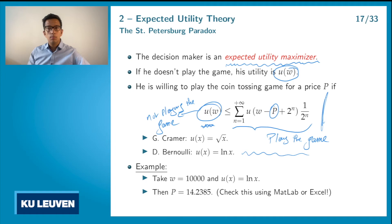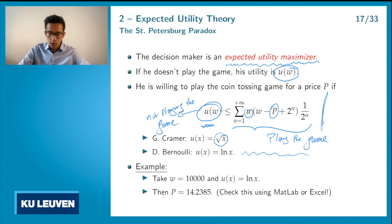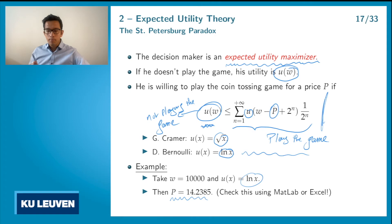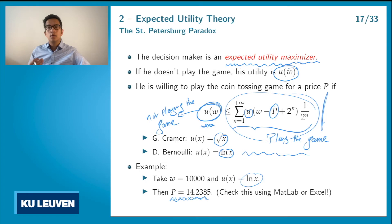You can check different utility functions; common ones are the square root function and the logarithmic function. If you use the log function, you will find that for a premium equal to approximately $14, the decision maker is willing to play the game, meaning the utility when playing exceeds the utility when not playing. Moreover, if the premium is below this amount — say $10 or $5 — the decision maker will also play the game, because you always prefer paying a lower premium. So if $14 is a good premium, anything below that value is automatically also a good premium.